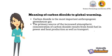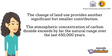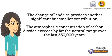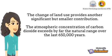Carbon dioxide is the most important anthropogenic greenhouse gas. The primary source of increased atmospheric carbon dioxide results from fossil fuel use in power and heat production as well as transport. Changes in land use provide another significant but smaller contribution. The atmospheric concentration of carbon dioxide exceeds by far the natural range over the last 650,000 years.